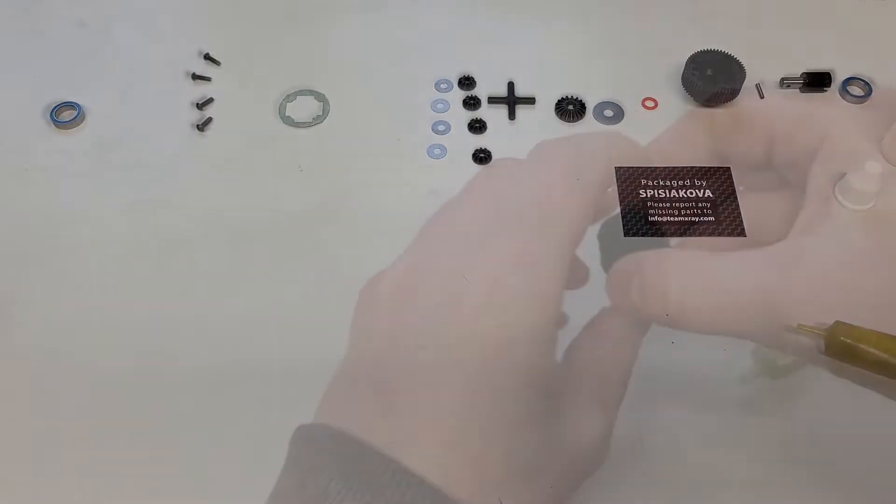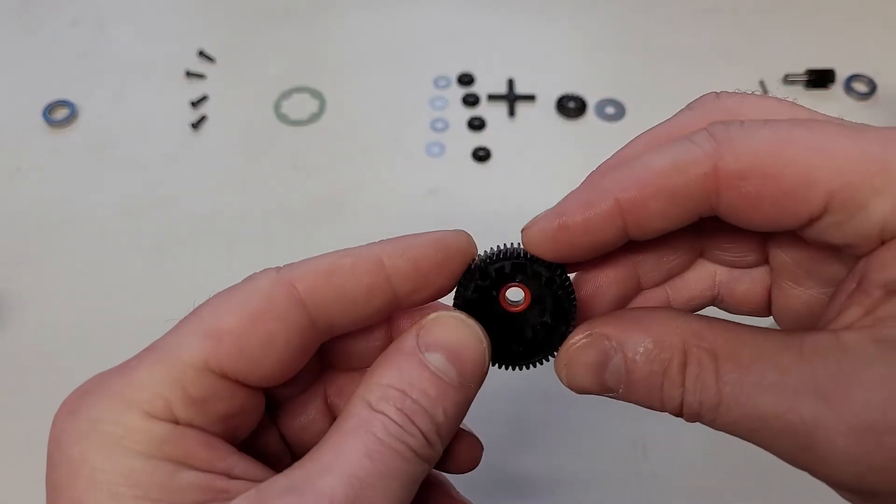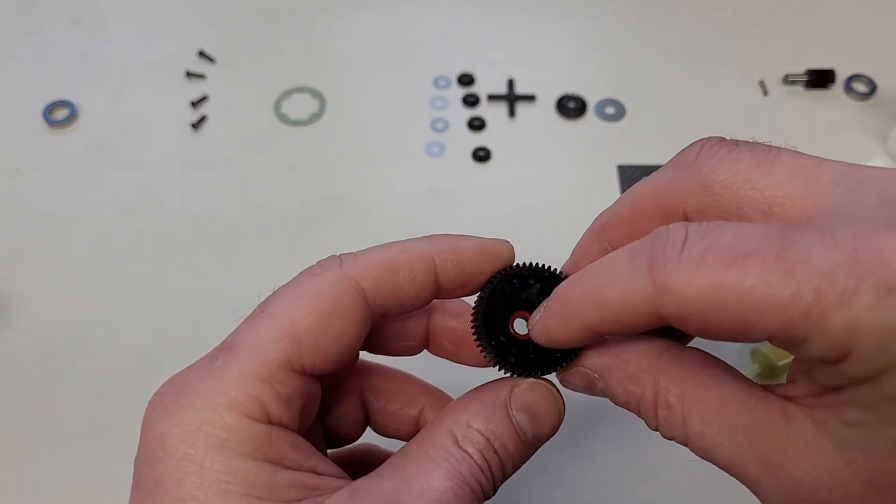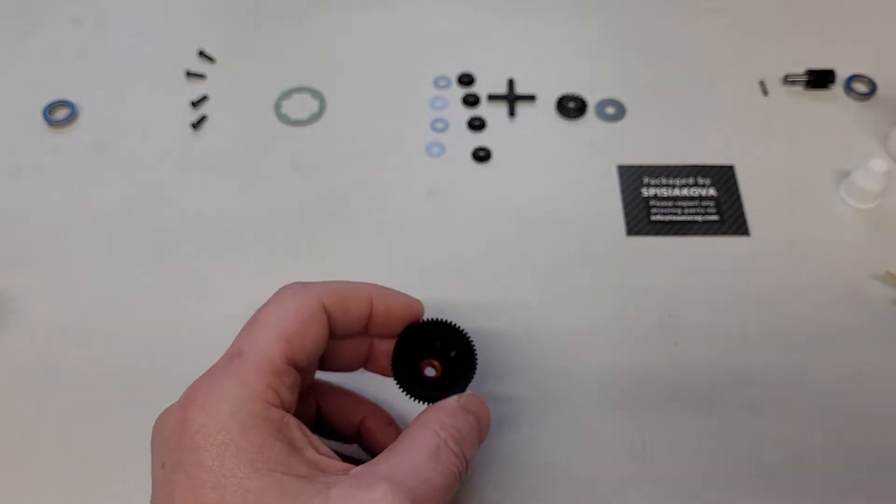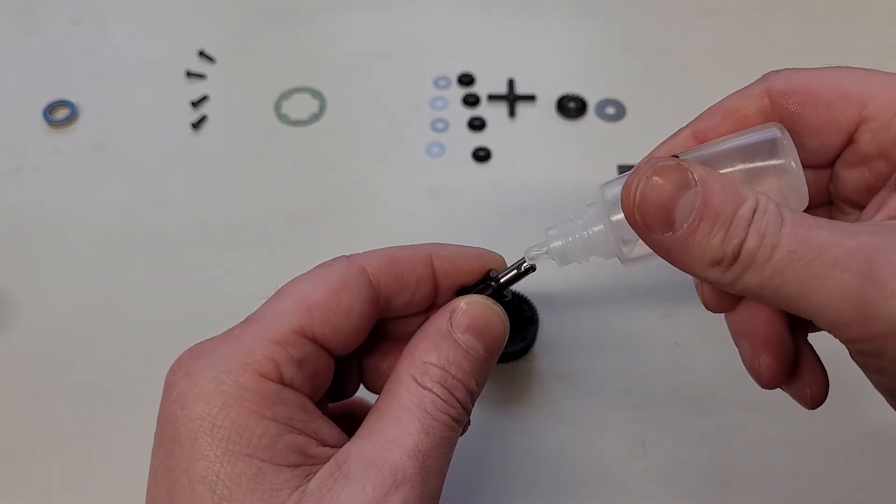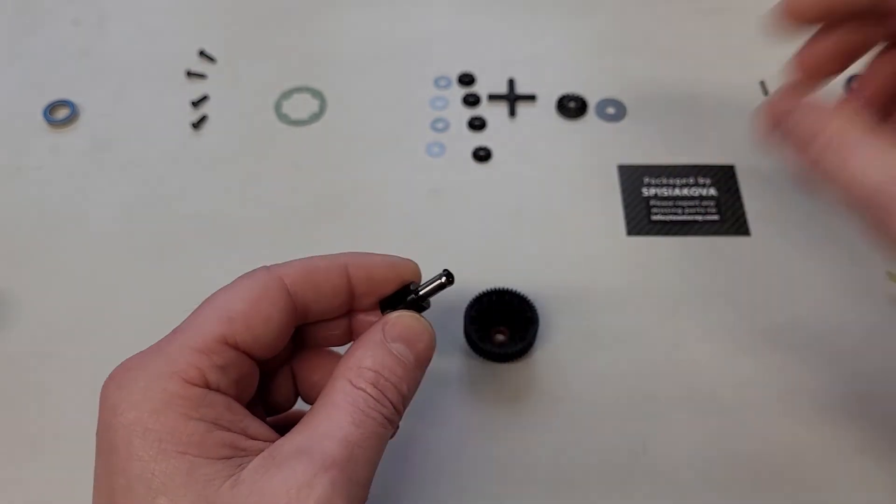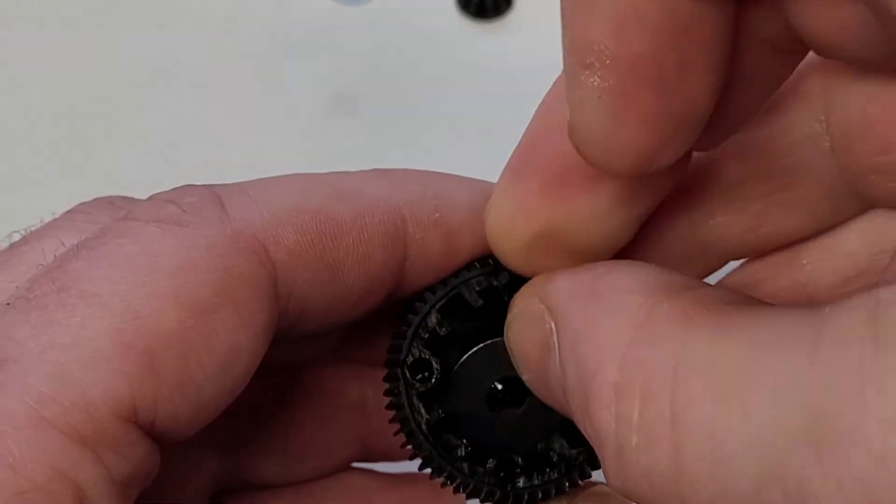So then we move on to this stage. Again, just check there's no burrs on that. I've already put the rubber in there and used again this green slime just to seat it. Pass the axle through—again we'll put a little bit of oil on that. The washer then goes on the back like so.